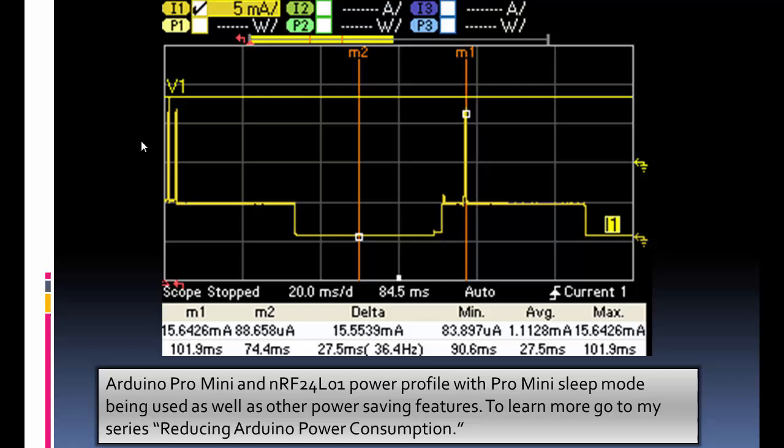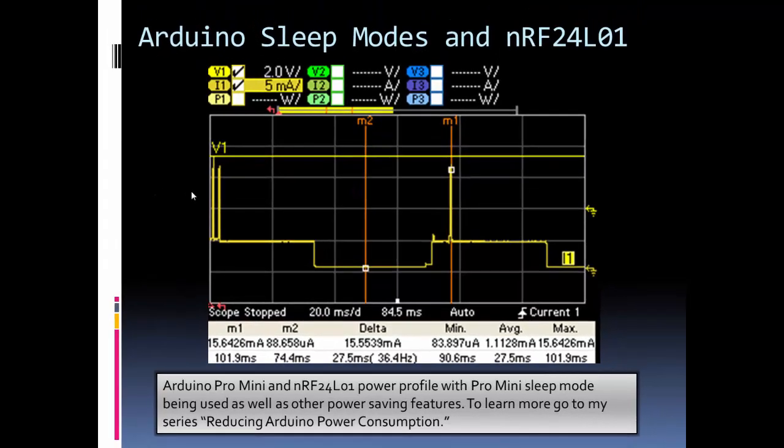Now, one disclaimer I'll mention here is, in a real wireless sensor setup, you're going to have the sensor drawing power. You may also have a voltage regulator or a DC to DC converter, and that's going to draw some power. So those have to be taken into consideration also. This is just meant to be an example.